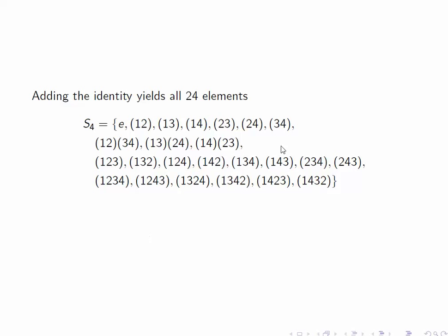So this gives us 24 elements in all in S4. The identity, the 6 transpositions, the 3 products of disjoint transpositions, the 8 3-cycles, and the 6 4-cycles.